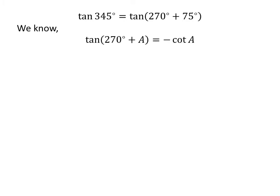We know the trigonometry identity: tangent of 270 degrees plus A is equal to minus cotangent of A. The proof of this identity is explained in the video appearing in the upper right corner, and the link is also given in the description section. So tangent of 345 degrees is equal to minus cotangent of 75 degrees.